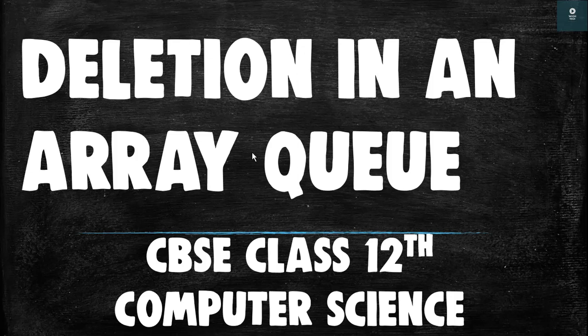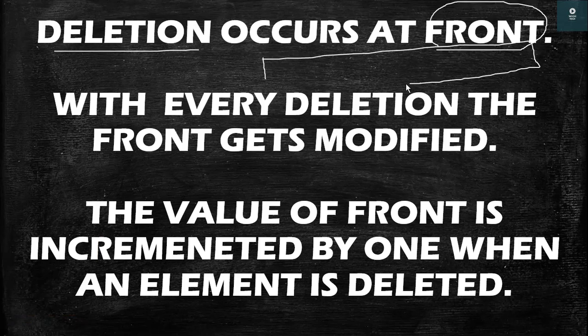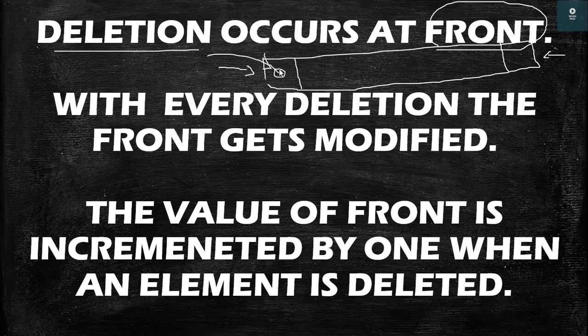Hey guys and welcome to ArcTech. In this video we'll see how to delete an element from an array queue. The deletion in an array queue will occur at the front. We know that in an array queue we have two variables storing the index of front and rear elements. Suppose the front is pointing here and the rear is pointing here. To delete an element we will delete the element from the front — this element is deleted from the queue.